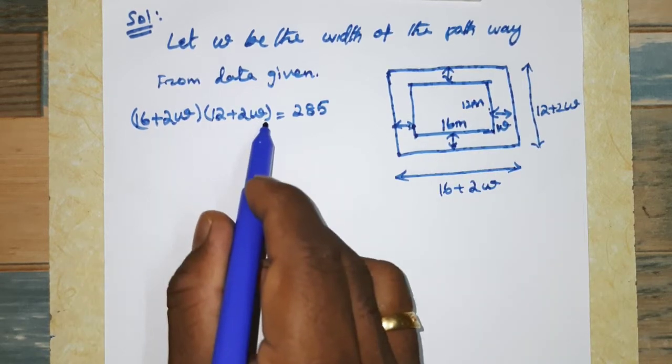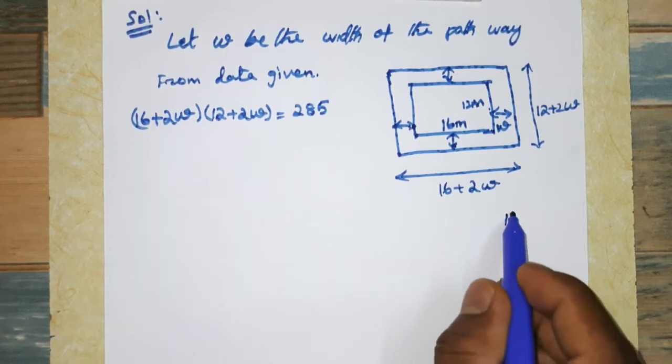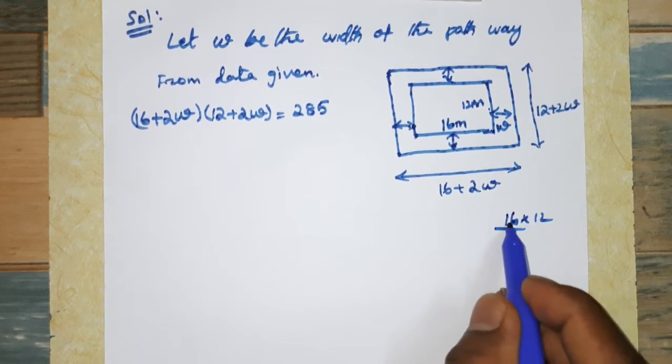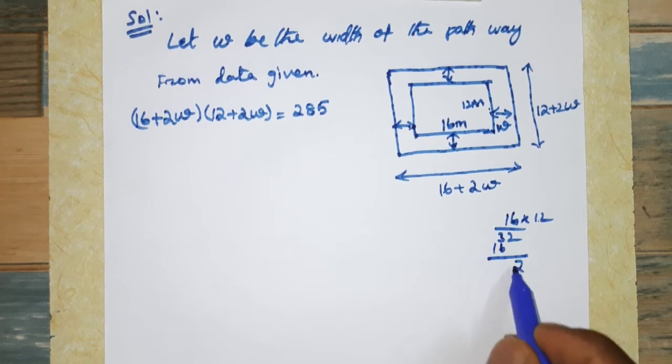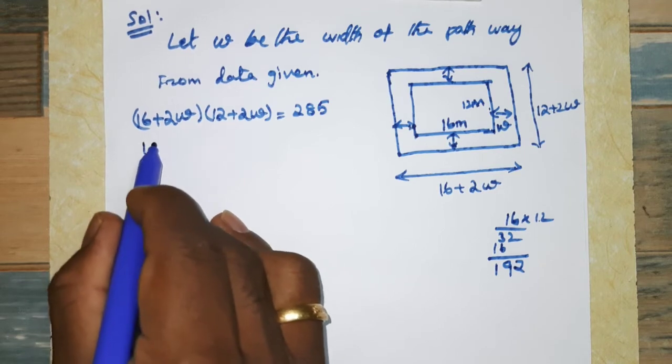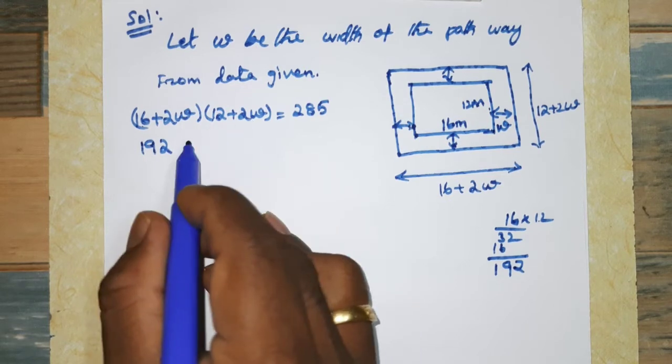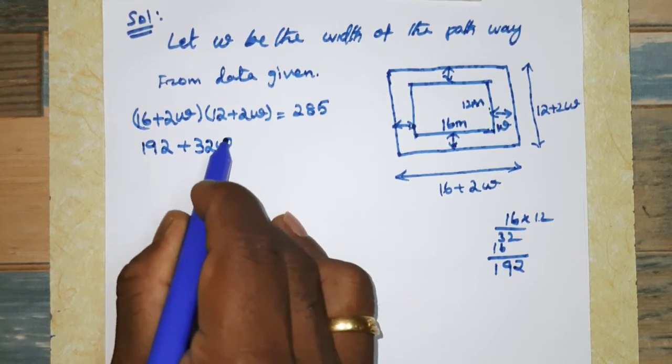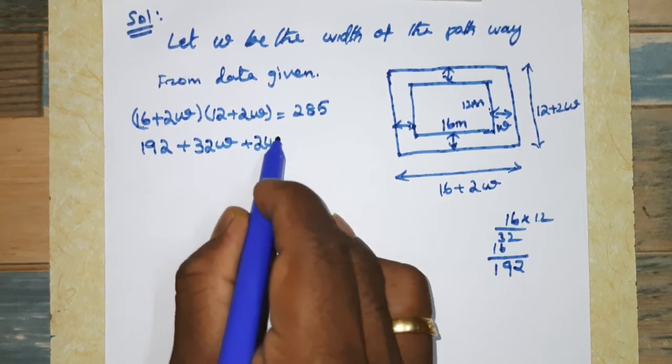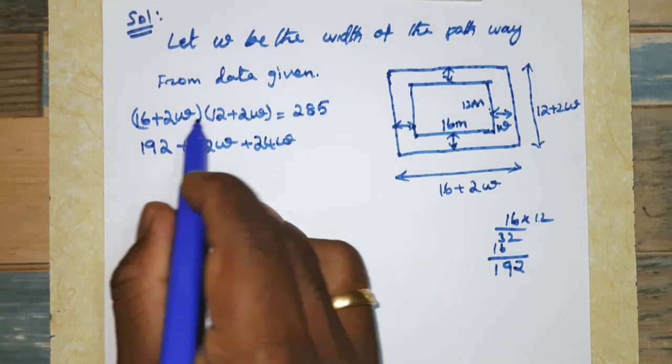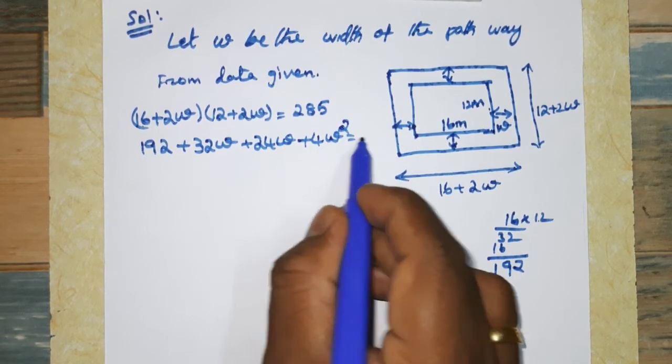Multiplying the quadratic equation: 16 into 12 is 192. 16 into 2W is 32W. 2W into 12 is 24W. 2W into 2W is 4W². So we get 4W² + 32W + 24W + 192 = 285.